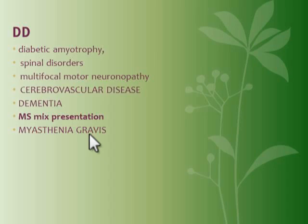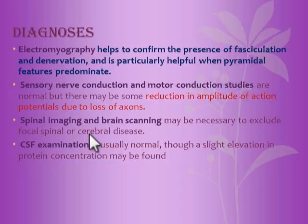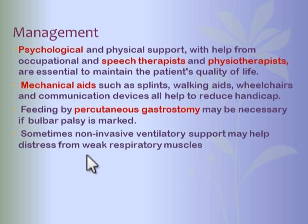Regarding diagnosis: electromyography helps confirm the presence of fasciculation and denervation, and is particularly helpful when pyramidal features predominate. Sensory nerve conduction and motor conduction studies are normal, but there may be reduction in the amplitude of the action potential due to loss of motor neurons. Spinal imaging and brain scanning can be done to exclude other cerebral or focal spinal diseases. Cerebrospinal fluid examination is usually normal but may show a slight elevation in protein concentration.